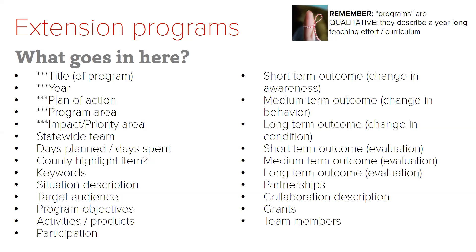Don't add up to more than 365 days across all your programs, even though it feels like we work that much. The title, year, plan of action, program area, impact area — now labeled priority area — and statewide team are all drop-down fields in the program form.